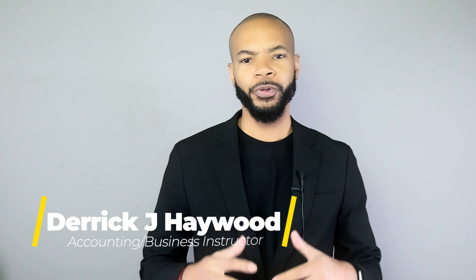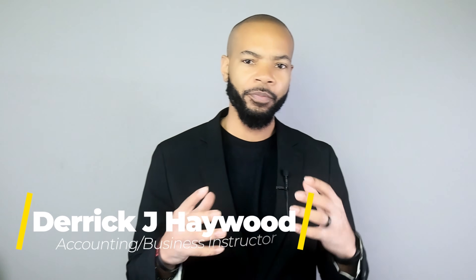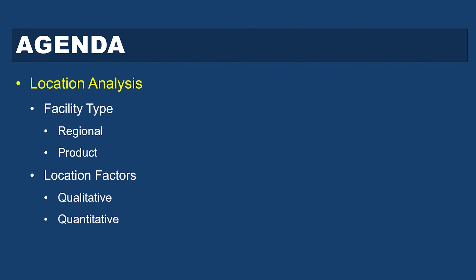One major decision you have to consider when it comes to capacity and the amount of capacity that you need is location — location analysis. In this video I'll talk about location analysis, the different types of facilities that you can build when it comes to manufacturing your product, and the quantitative and qualitative factors that go into choosing a specific location.